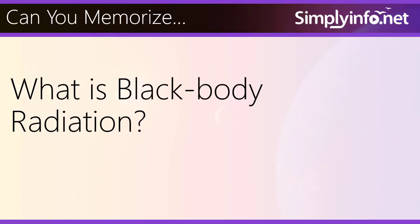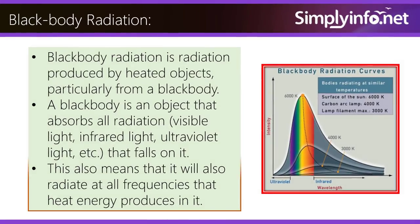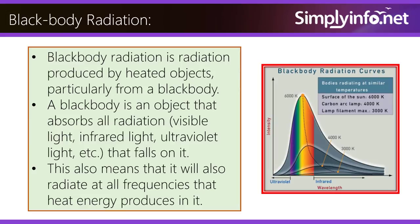So now do you know what is blackbody radiation? Blackbody radiation is radiation produced by heated objects, particularly from a blackbody. A blackbody is an object that absorbs all radiation — visible light, infrared light, ultraviolet light, etc. — that falls on it. This also means that it will also radiate all frequencies that heat energy produces in it.